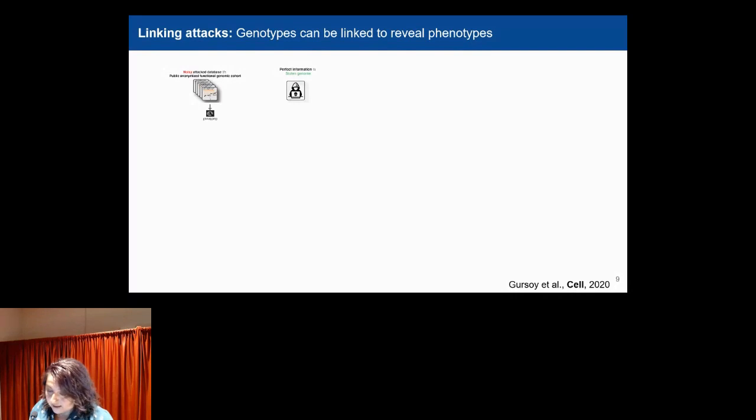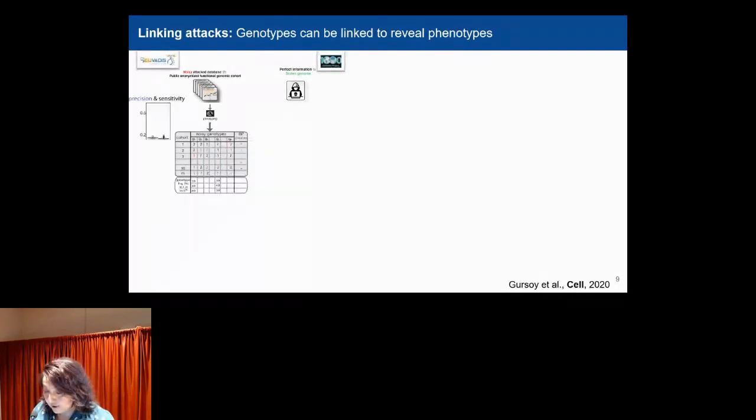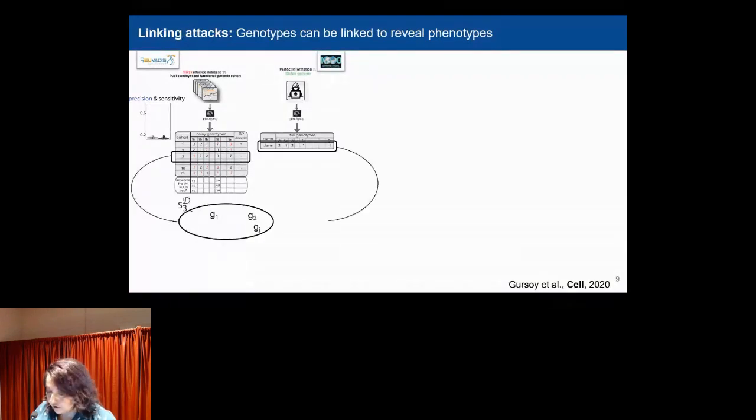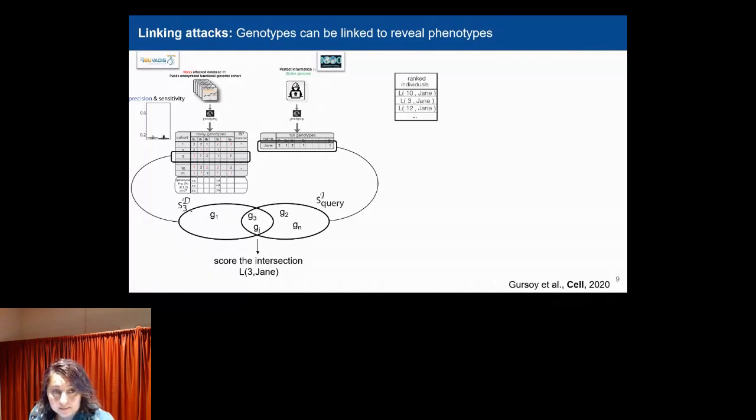What I can do is genotype the reads from the RNA-seq, and I get this really noisy dataset. You can see the precision and sensitivity is pretty low. If you do very vanilla genotyping, you don't get really much. I already have the genome of Jane. I can actually intersect Jane's genome with every single individual in this dataset, and then score this intersection based on the allele frequency of these genotypes. Then I can rank these linking scores. Based on the ranking, I can assume that the top-ranked individual is probably Jane.